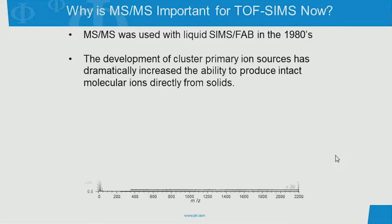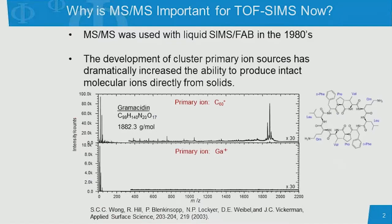I'll give one example that I particularly like, because it was at the beginning of that major change in TOF-SIMS back in 2003. This is a comparison of a peptide analyzed by John Vickerman's group in England, comparing what we were using before — gallium, shown at the bottom — with what is possible with a cluster primary ion beam, C60 in this case. The molecular weight of this peptide is 1,882, and we get a very nice signal with C60 and absolutely nothing with gallium. It's a pretty dramatic illustration of why we did not need MS-MS for most of the history of TOF-SIMS, and it's only been recently where it's become critically important — now that we can produce these large molecular ions, we need to identify them.